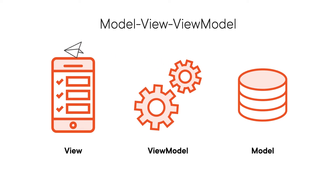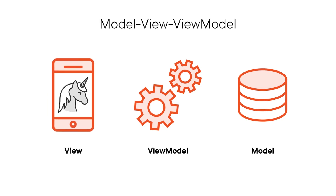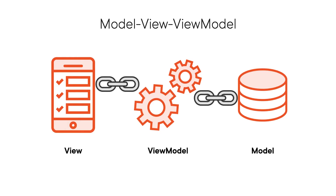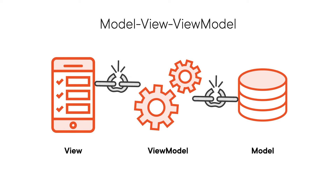MVVM uses a technique called two-way data binding. Thanks to data binding, model changes get automatically propagated to the view and the view model. In addition, the model gets updated whenever the relevant data gets modified on the user interface. So, unlike with the MVC pattern, the model and the view controller don't need to explicitly notify each other about data changes. This approach eliminates a lot of code and removes dependencies, producing an even more decoupled design. Since less code means less maintenance work and fewer chances of introducing bugs, the MVVM pattern results in a codebase that's more reliable and easier to work with.